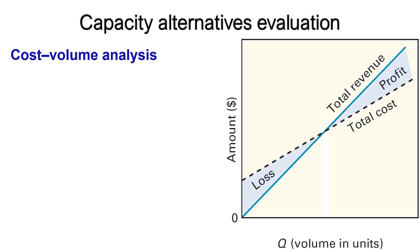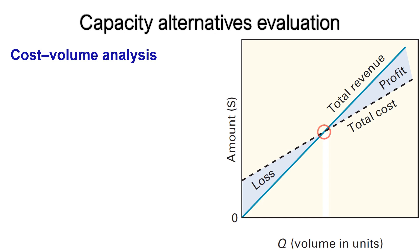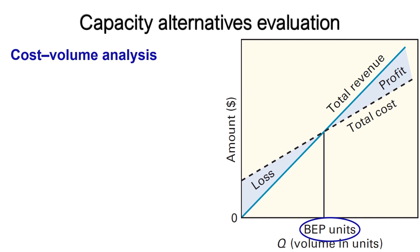The relationship between profit and volume of output is illustrated, where profit is the difference between total revenue and total cost. The volume at which total cost and total revenue are equal is referred to as the break-even point, denoted by BEP. When volume is less than the break-even point there is a loss; when volume is greater than the break-even point there is a profit.